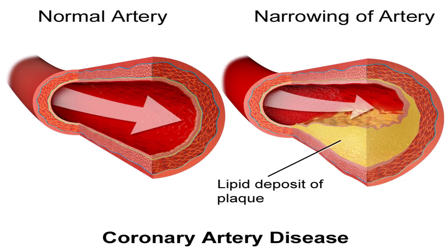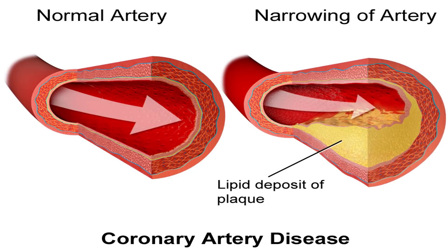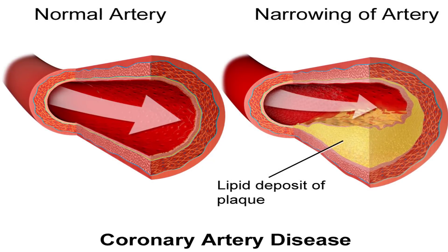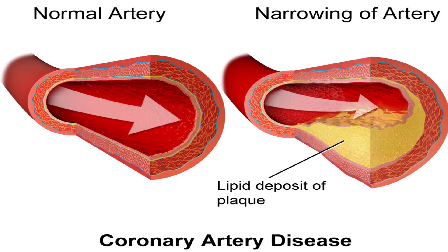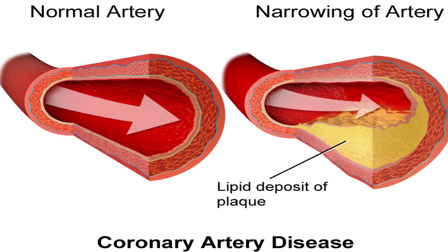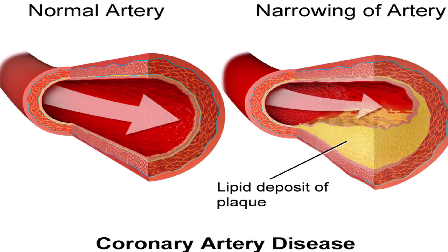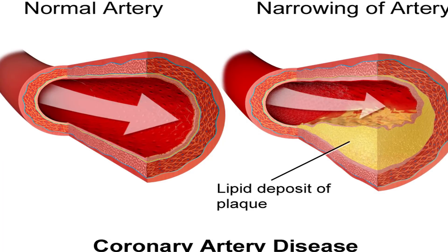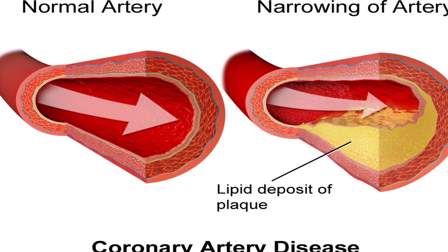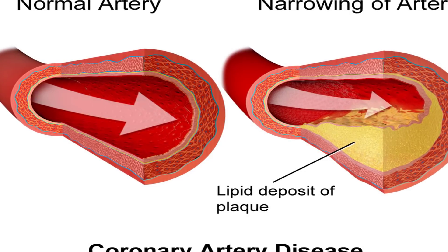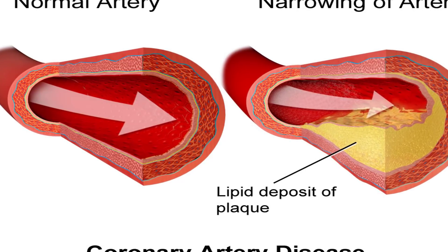These arteries bring oxygen and glucose-rich blood to your heart. Your heart is a muscle responsible for pumping blood throughout your body. According to the Cleveland Clinic, a healthy heart moves approximately 3,000 gallons of blood through your body every day. Your heart must receive an adequate, dependable supply of blood in order to carry out its work. Reduced blood flow to your heart can cause symptoms of CAD.